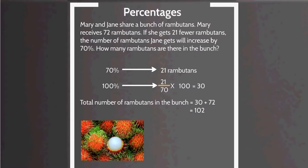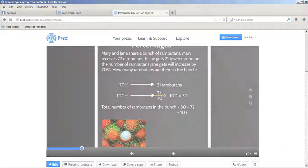And 100% is equivalent to 21 over 70 times 100, which equals 30. This 100% represents Jane's share, so Jane got 30 rambutans. The total number of rambutans in the bunch equals 30 plus 72, which is equal to 102.